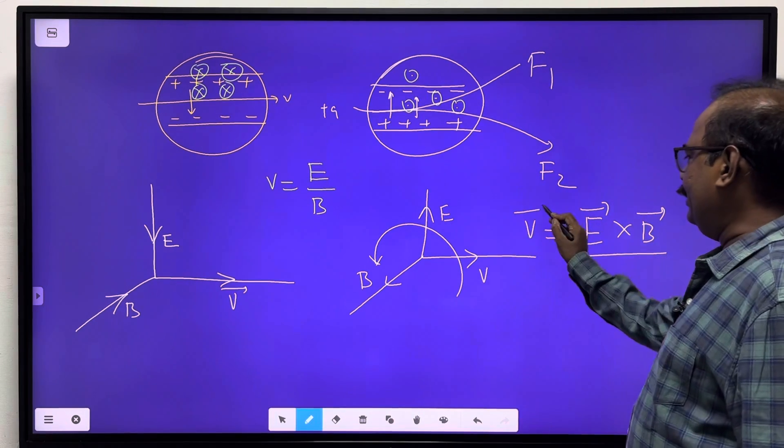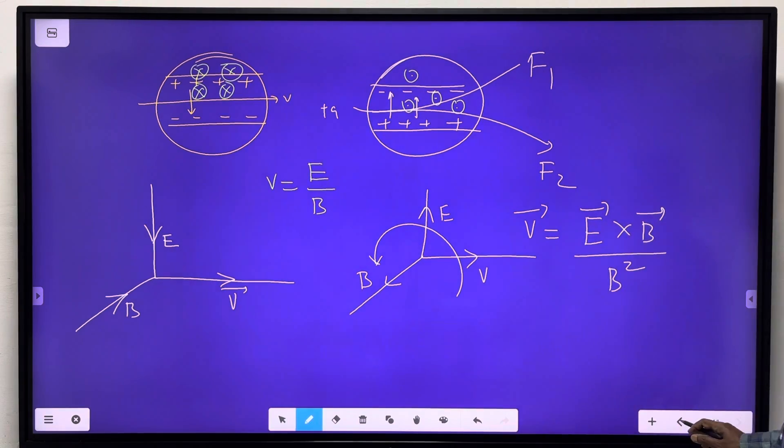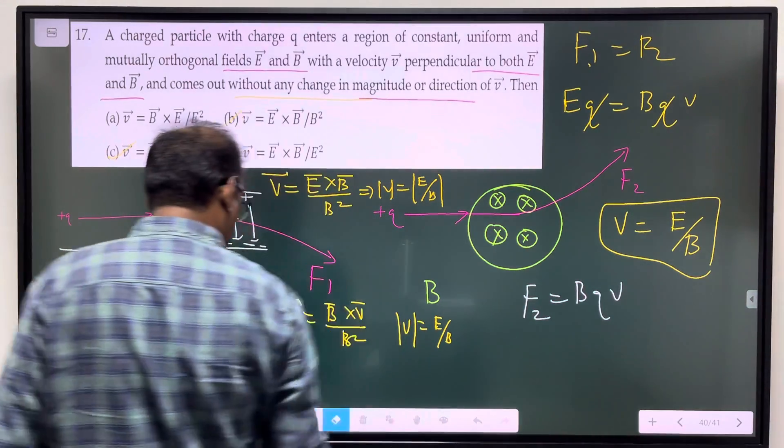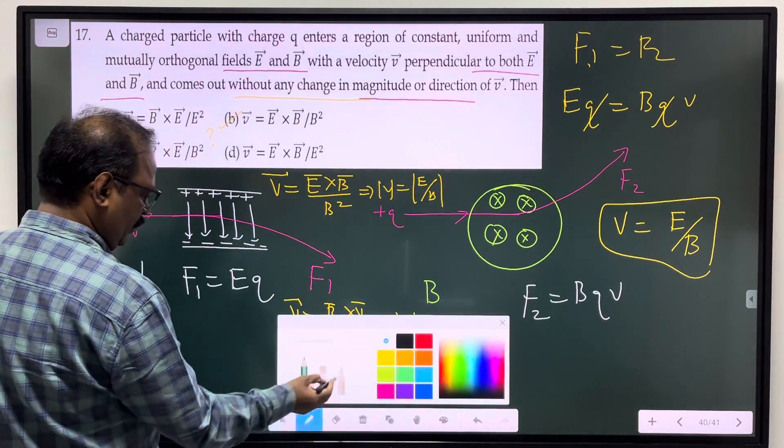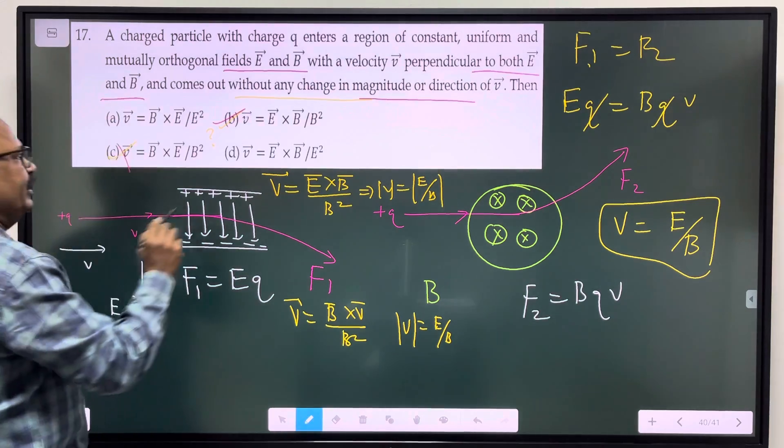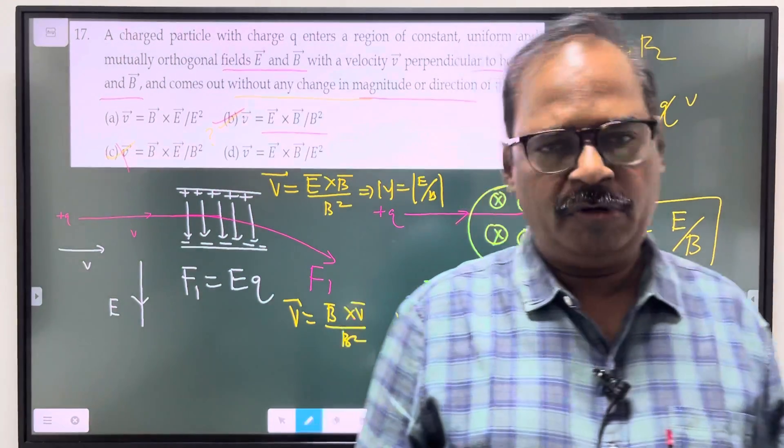E cross B is correct. Okay, I'm going to see you in the next question.